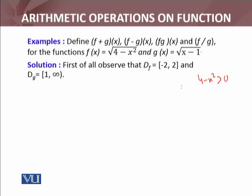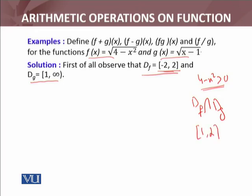Similarly f of x کی domain کے لیے four minus x squared greater than zero ہوگا۔ یہ inequality minus two اور two کے درمیان کے real numbers satisfy کرتے ہیں، so domain of f is the open interval (-2, 2). Both these functions are real valued functions. اب d of f intersection d of g نکالنا ہے — ان کی intersection ہوگی (1, 2)۔